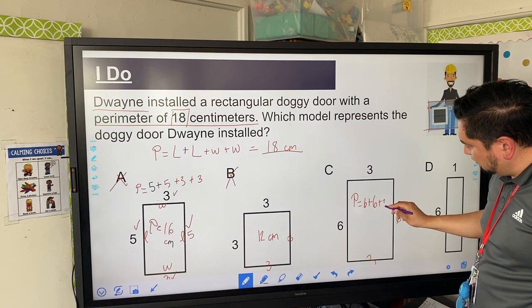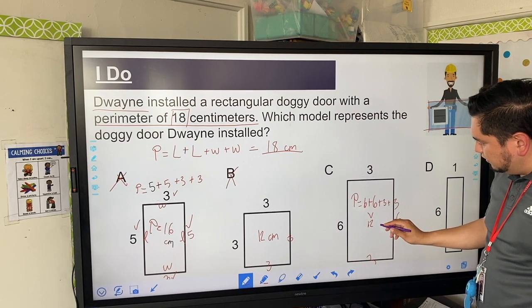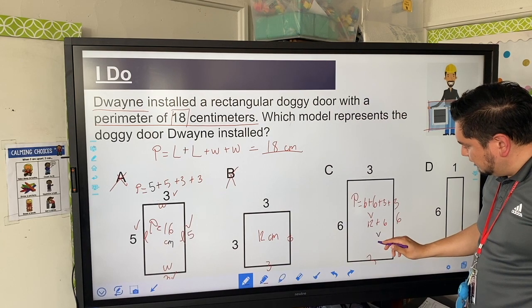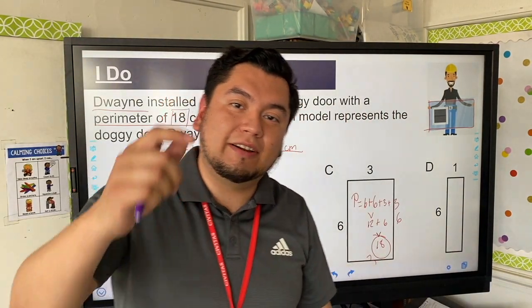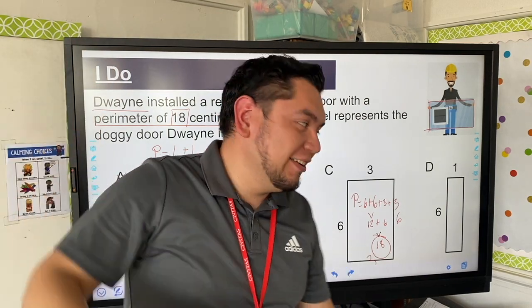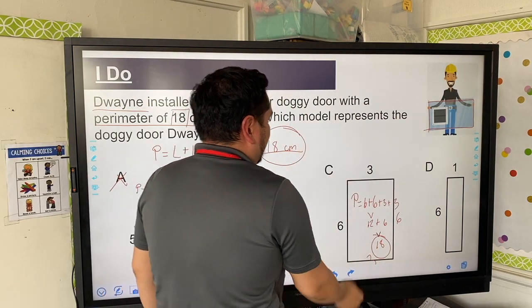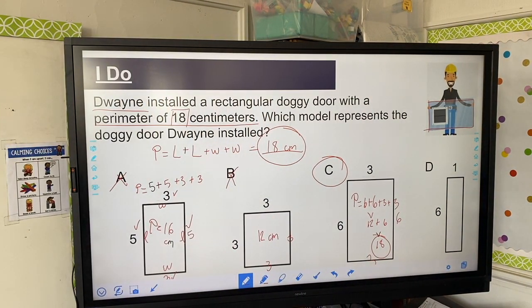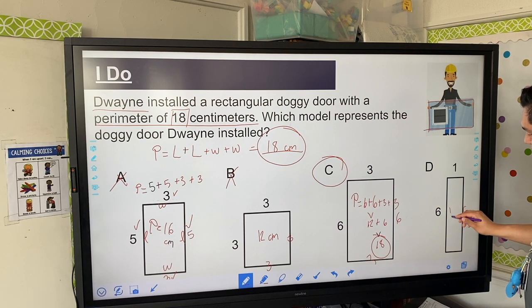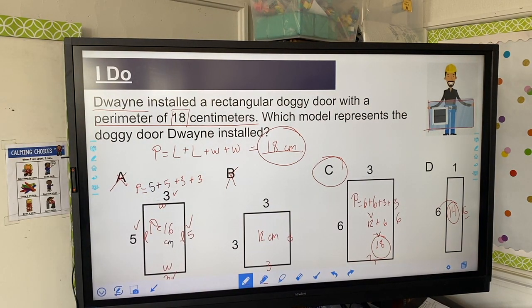Now option C — opposite sides are congruent: six plus six plus three plus three. That's 12 plus 6 equals 18. That's my answer — 18! They're asking for 18, so option C works. You can go in and check the last one, but I can tell you that six plus six equals 12, plus one is 13, plus another one gives us 14 — so that one is not going to be the answer. Now I'm going to tell you something: they're not always going to be that easy.